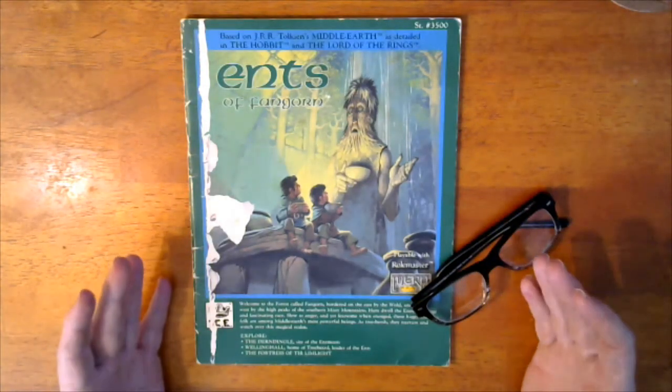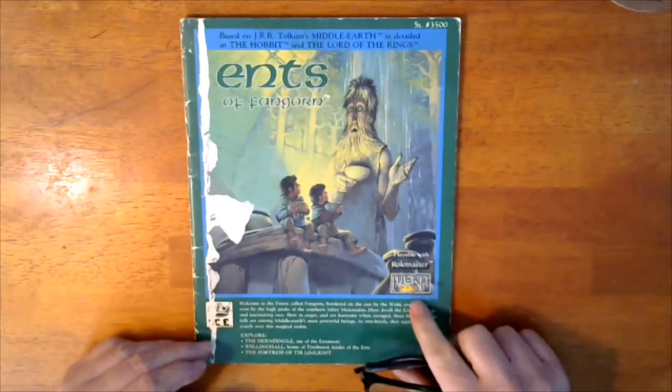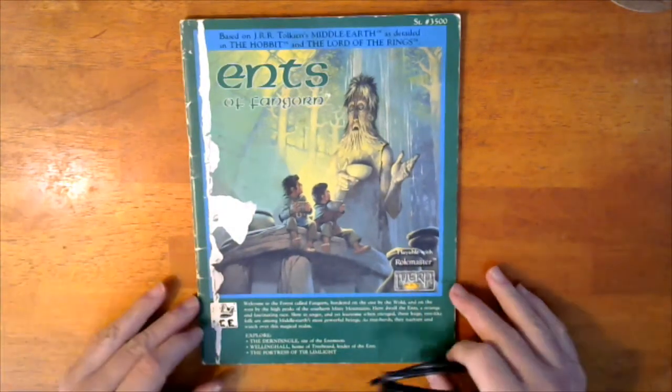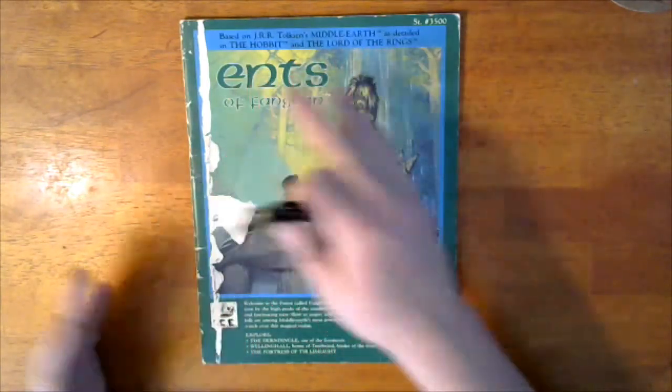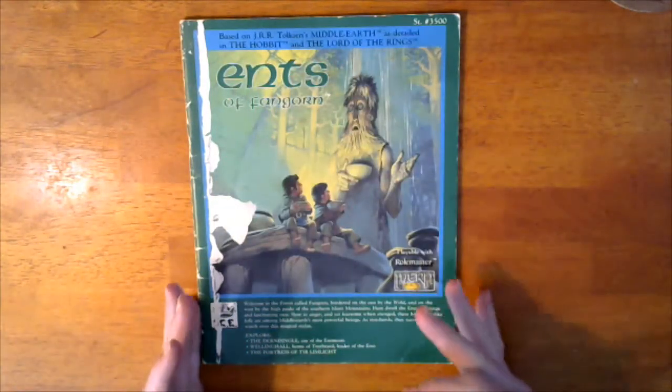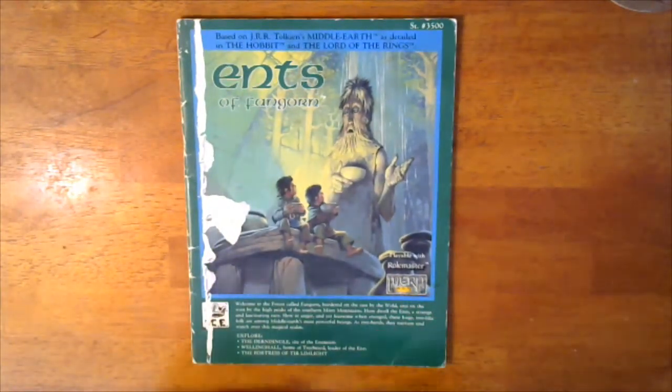This is the Ents of Fangorn for Middle-earth Role Playing game, MERP. Based on J.R.R. Tolkien's Middle-earth as detailed in The Hobbit and The Lord of the Rings. This is the source book. It's much more than just an adventure module.